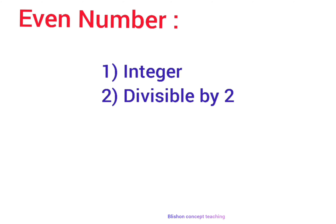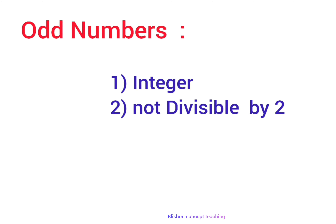To prove a given number is an even number, it has to satisfy the following conditions: a given number must be an integer and it must be divisible by 2. To prove a given number is an odd number, a given number must be an integer and it must not be divisible by 2.